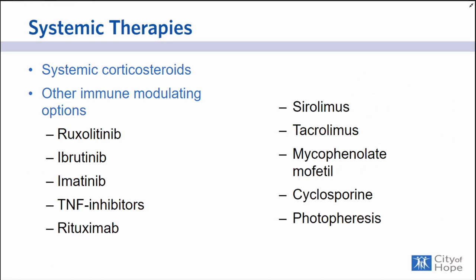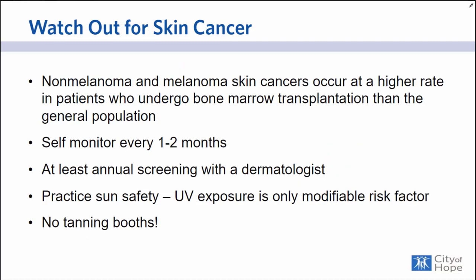There is a long list of systemic therapies primarily managed by your transplant doctor. Typically we start with corticosteroids at the onset of symptom development. In the last few years, a number of new medications have been tested in clinical trials to treat chronic graft-versus-host disease. I think the next five to ten years we are going to see an explosion of novel treatment approaches to chronic GVHD, so definitely keep your eyes open for these.